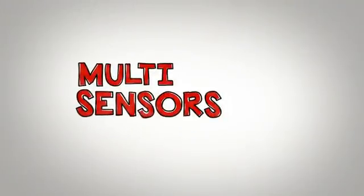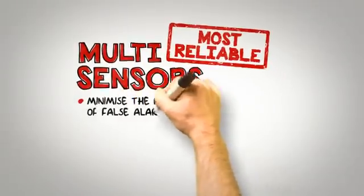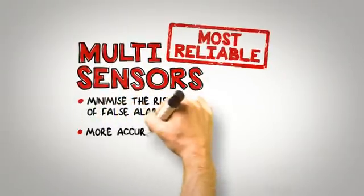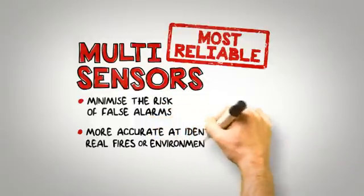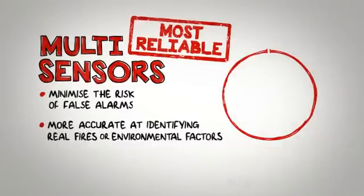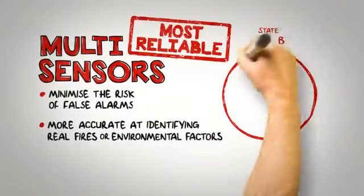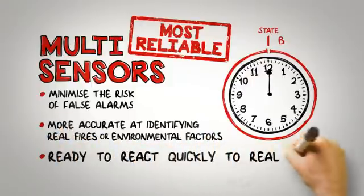Multi-sensors. The most reliable option for many environments is the multi-sensor. These devices can help to minimize the risk of false alarms as they are much more accurate at identifying whether there is a real fire or if the alarm is being triggered by an environmental factor such as dust or steam. Each multi-sensor can be set with different sensitivity states and be programmed to react differently depending on the time of day. These intelligent features help to remove any risk of false alarms but are ready to react quickly to real fires.